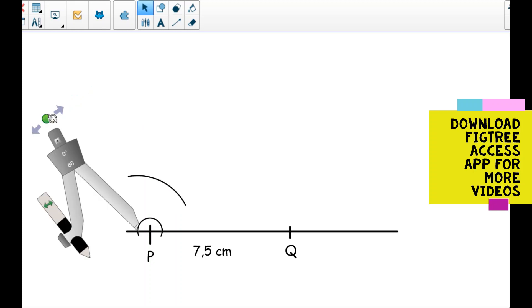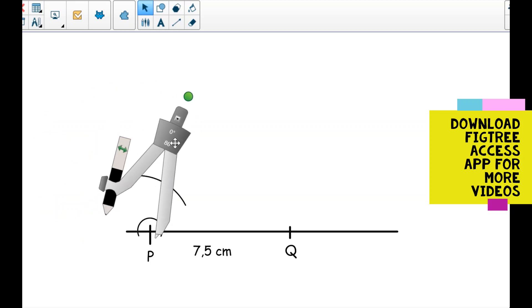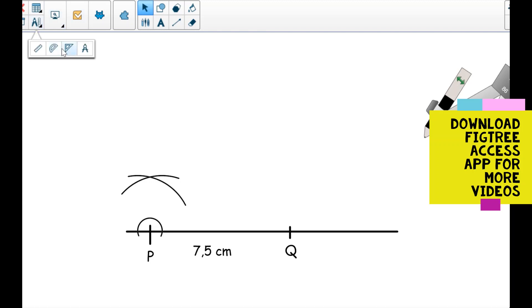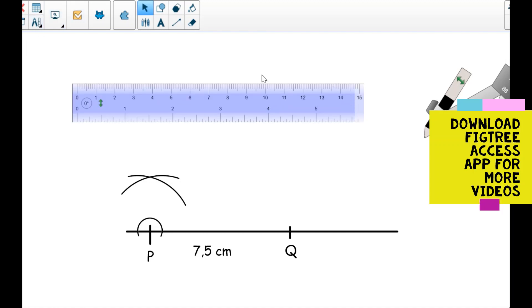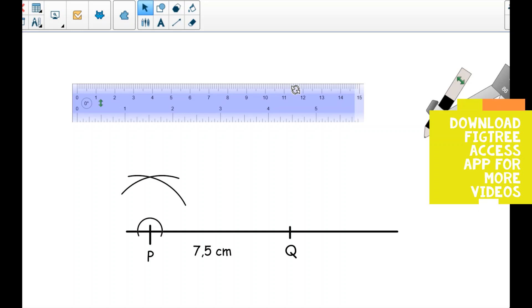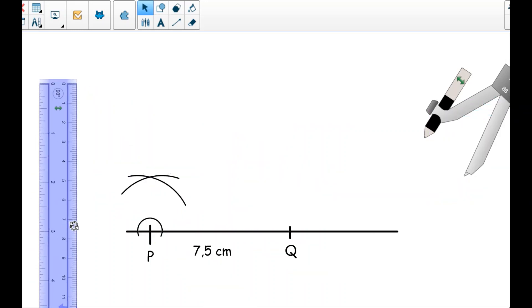Then I will switch my compass and go to the other end where it intersects with the line. I will draw an arc again. Then I will take my ruler and draw a straight line from point P to where the arcs are intersecting.